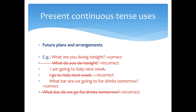Another example: 'I'm going to Italy next week.' That is also a plan for next week, so we say 'I'm going to Italy.' It would be incorrect to say 'I go to Italy next week' — we can't use present simple there. Also: 'What bar are we going to for drinks tomorrow?' is a future arrangement — maybe some friends have plans and are asking each other. We cannot say 'What bar do we go for drinks tomorrow?' — that is a wrong sentence.